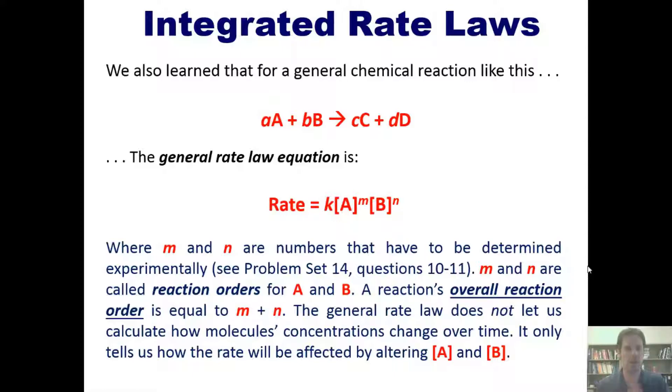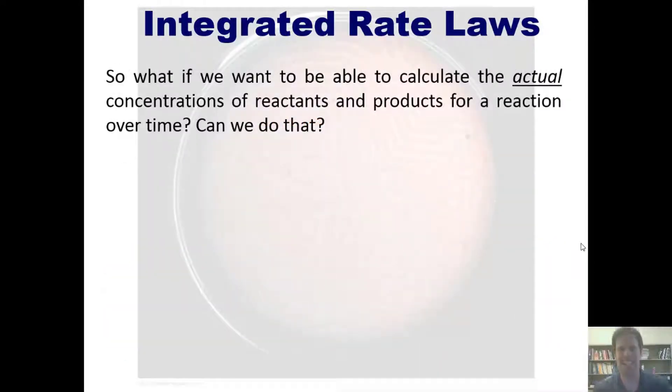The general rate law, this thingy right here, does not let us calculate how molecules concentrations change over time. It only tells us how the rate will be affected by altering the individual concentrations of a and b. So what if we want to be able to calculate the actual concentrations of reactants and products for a reaction over time? Can we do that?